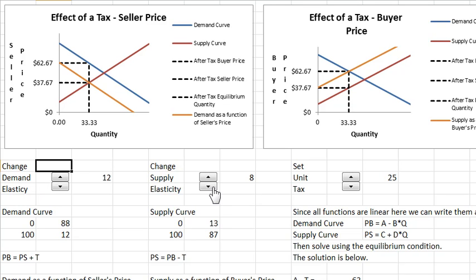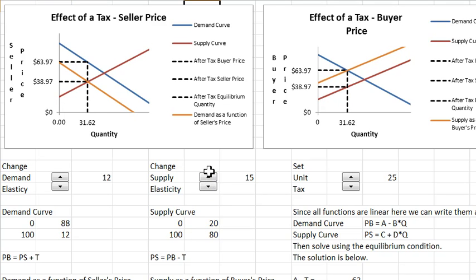Likewise, if I make supply more elastic. So let's make supply—now the buyer price goes up. More of the tax is borne by the buyers as supply gets more elastic. And again, as you make supply more elastic, the quantity goes down more.